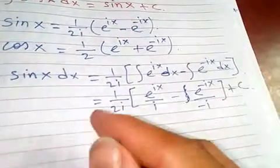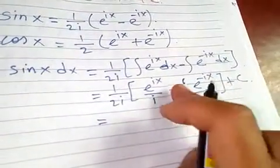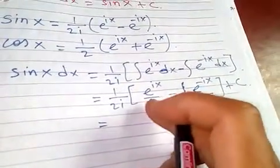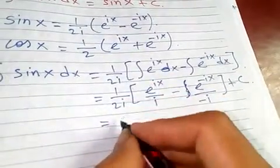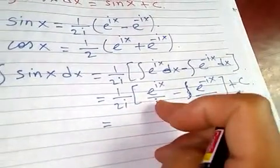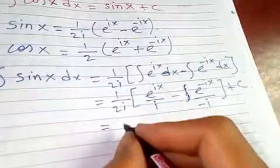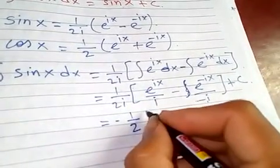Writing c here. The minus i becomes plus when we simplify. Factoring out the i terms, we get 1/(2i²). Since i² = -1, we get -1/2(e^(ix) + e^(-ix)).